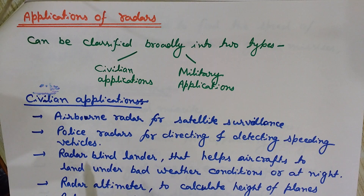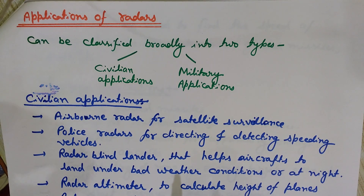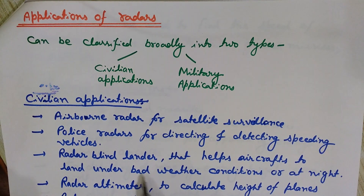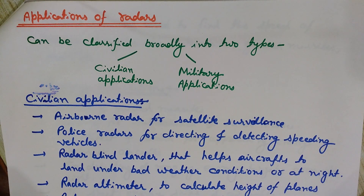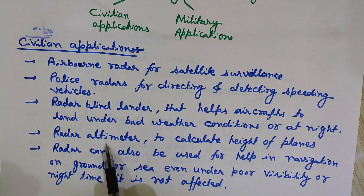Radar blind lander helps aircraft to land under bad weather conditions or at night. When weather visibility is very poor, it becomes difficult for the pilot to land safely. Radar can be used in this case, as it does not depend on good visibility — its function is just to send signals, receive the echo signal, and analyze it. So it can be used at night or in bad weather conditions like fog.